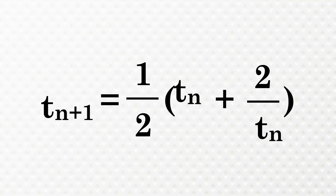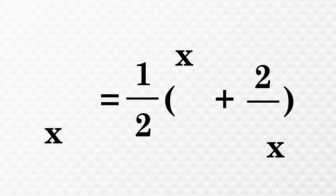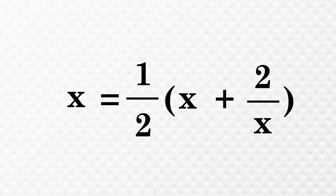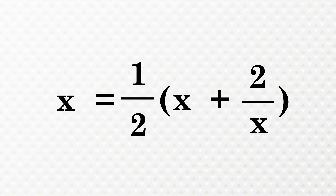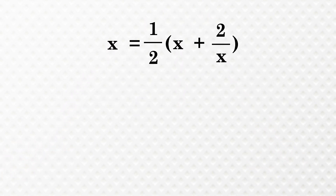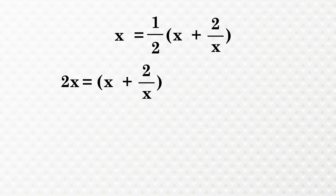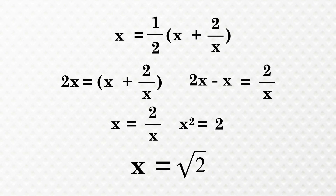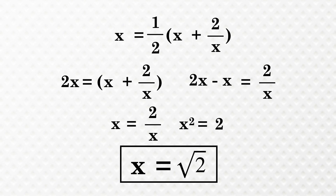Since it converges at a very large number of recursions, the value of tn and tn+1 will almost be the same. Let's replace that value with an x. As we go through this calculation, we find that x actually has the value of root 2, which means the terms of the sequence tn will converge to root 2.